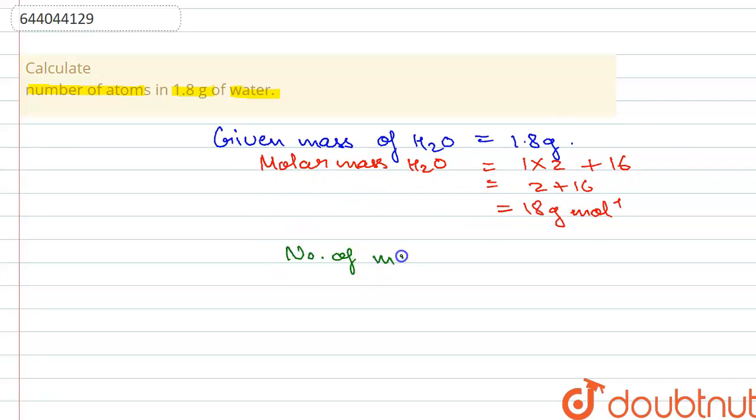of moles in 1.8 grams of water, which is given by: given mass upon molar mass. If we substitute it, we get 1.8 divided by 18, which equals 0.1